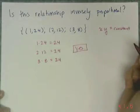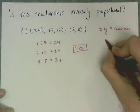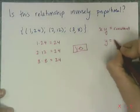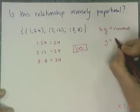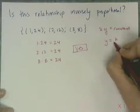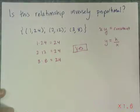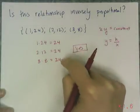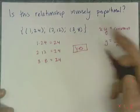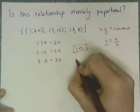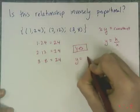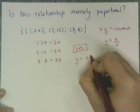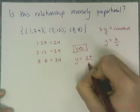Furthermore, I can write the equation because I know it is of the form y equals the constant divided by x. And so this process here told me the constant, which gives me the number I need in my equation.